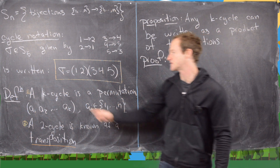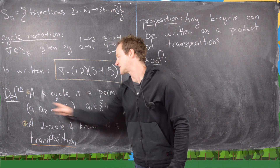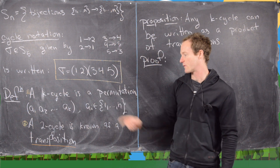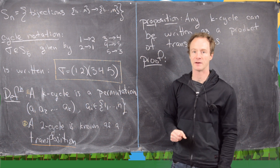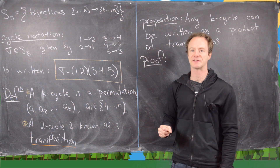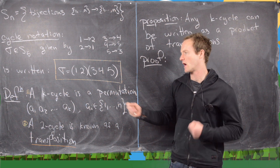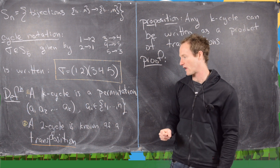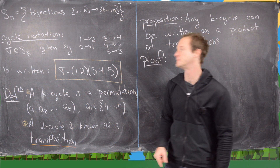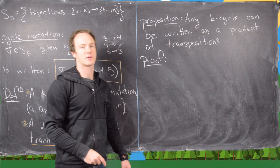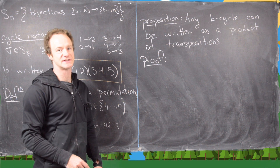A K-cycle is a permutation of the form (A1 A2 ... AK), where those Ai are between 1 and N. It's easy to prove that every element of the symmetric group can be written as a product of disjoint cycles — that's proven in another video. Furthermore, a 2-cycle is known as a transposition. The first proposition we want to prove is that any K-cycle can be written as a product of transpositions.